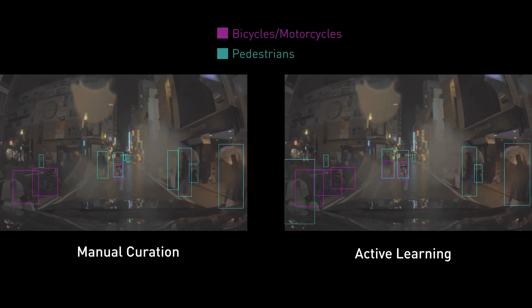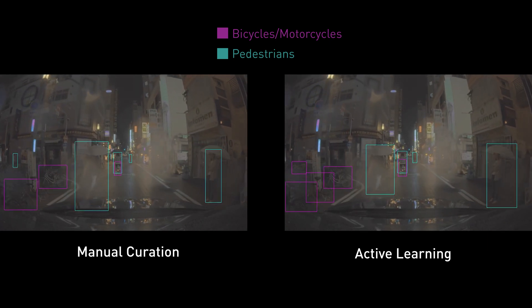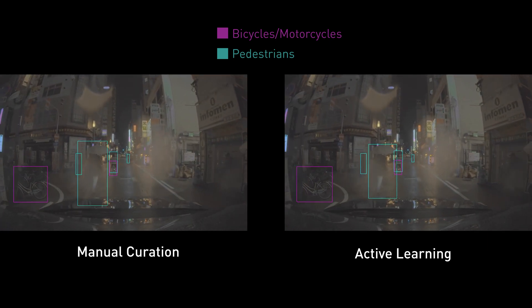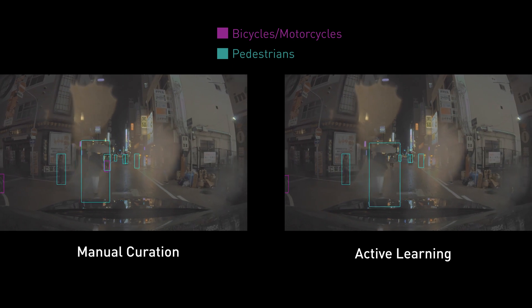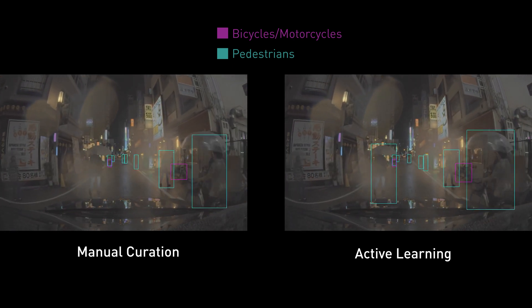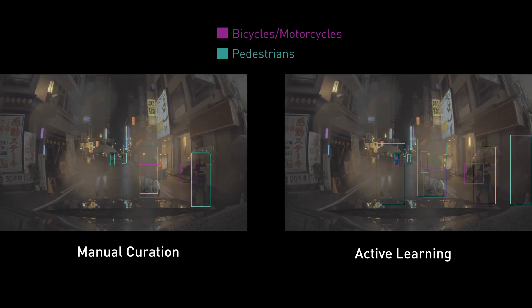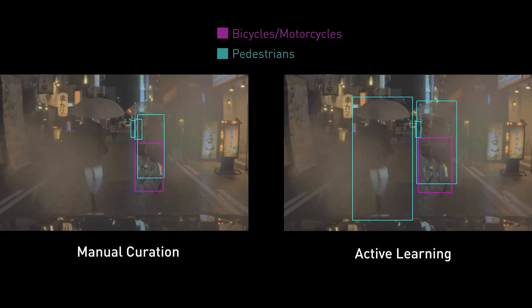In this clip, we have a Drivenet DNN model trained on manually selected data on the left, and a Drivenet model trained with active learning-based data selection on the right. With manual curation, we see that the detection of the pedestrian holding an umbrella disappears as soon as a small raindrop falls on the camera lens.